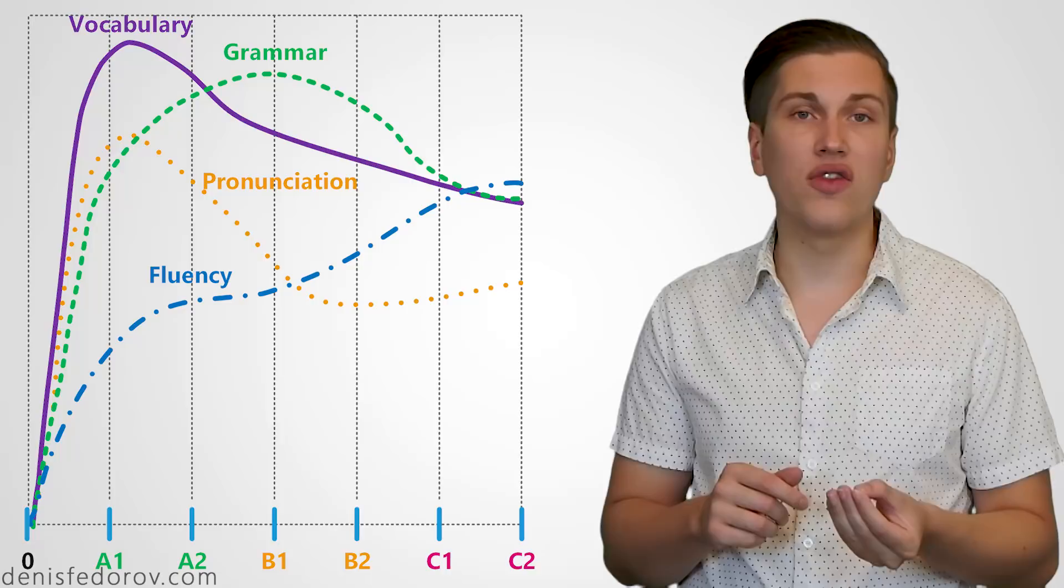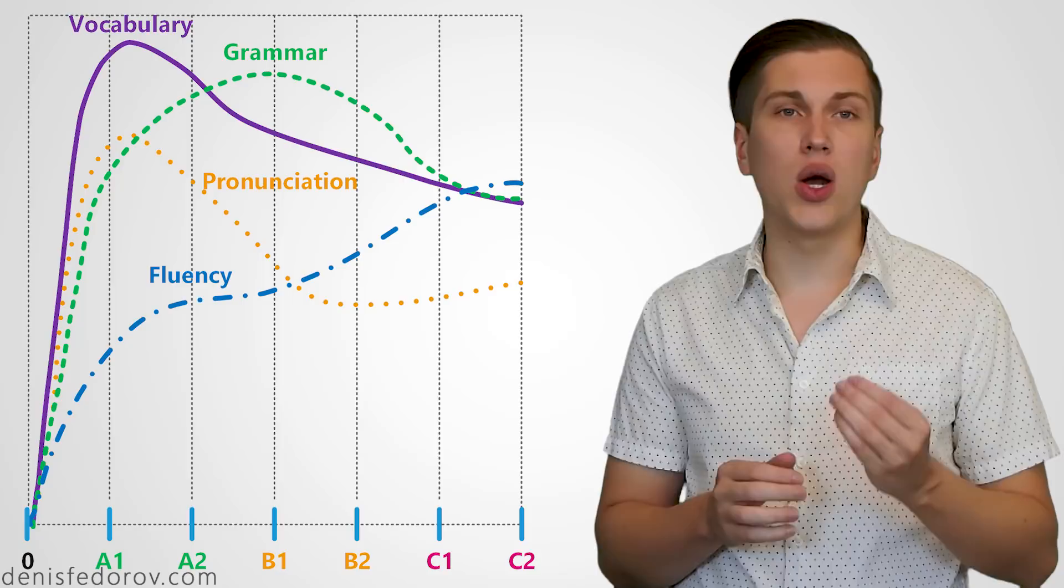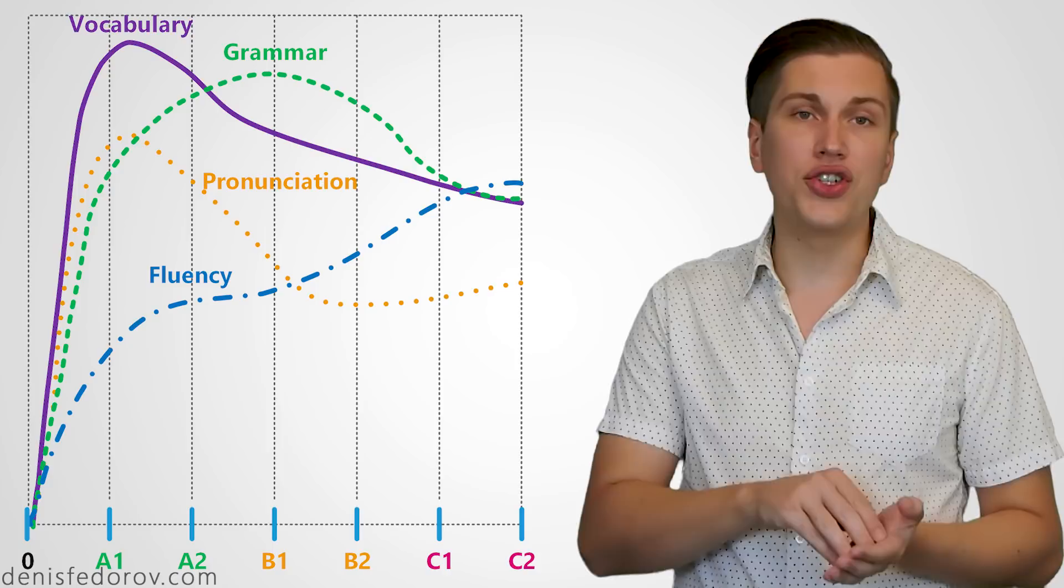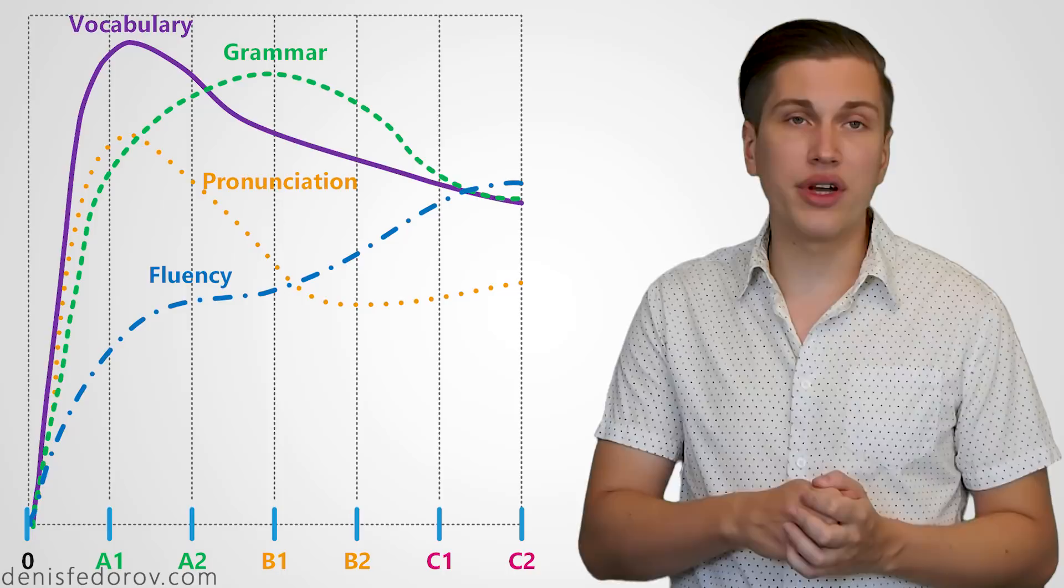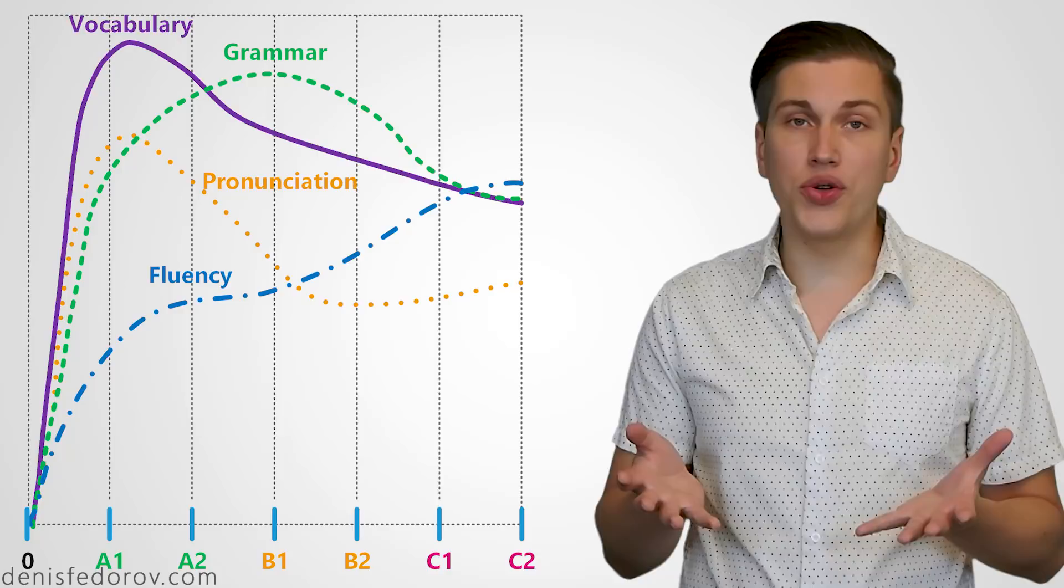So with the help of this image we shall review the whole Russian language learning path based on major essential skills which in this particular diagram are vocabulary, grammar, pronunciation and fluency. So what do these skills mean exactly?